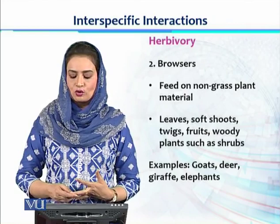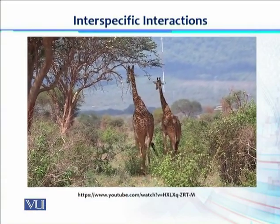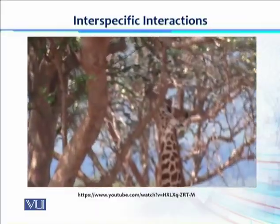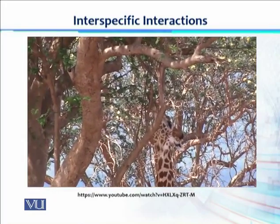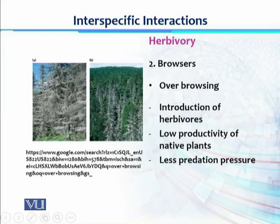Examples of browsers are goats, deer, giraffes, and elephants. In this video, we can see that a giraffe does not eat abruptly or from everywhere — it finds its food, specifically the leaves of a tree, and feeds selectively on those leaves only. However, there is a disadvantage: over-browsing. The presence of abundant primary productivity attracts herbivores to enter the habitat and flourish there, resulting in over-browsing. The image shows caterpillars that have eaten the leaves of plants, which is an example of over-browsing. This over-browsing results in low productivity of native plants due to less predation pressure on herbivores.